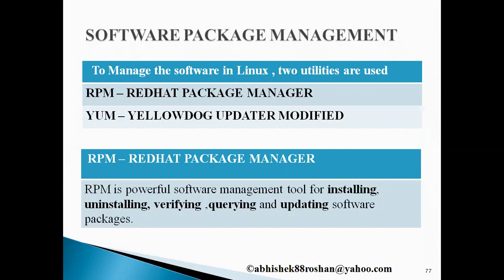To manage software in a Linux operating system, there are two utilities. The first utility is RPM, which is mainly for Red Hat Linux but works for most Linux distributions. The second utility, which is used widely across all Linux distributions and flavors, is YUM. Using these two utilities, you can install, uninstall, verify, query, and update your software packages.